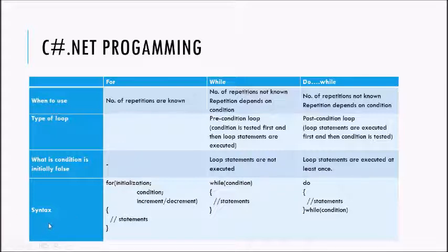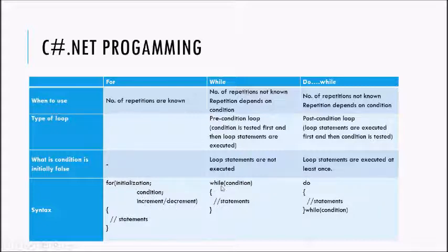If you look at the syntax for these loops, in the case of the for loop there are three sections: first is initialization, second is condition, and third is increment or decrement. In the case of the while loop, since it is a precondition loop, you specify the condition at the start.